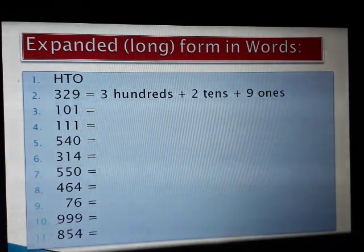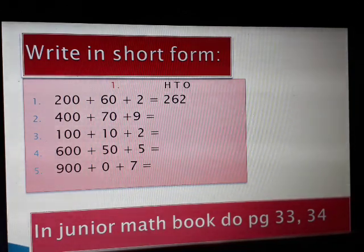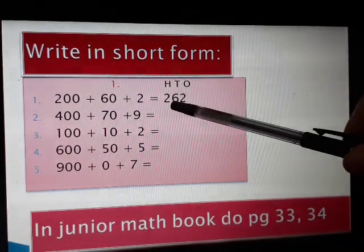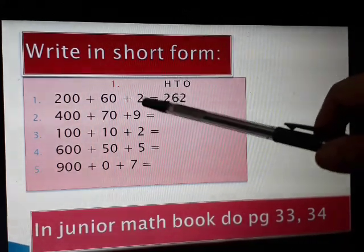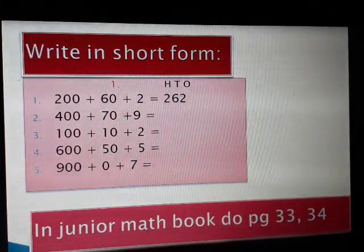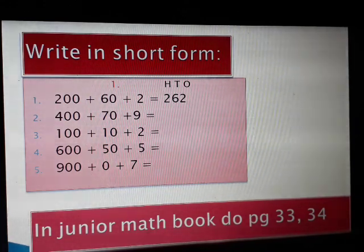Next is the short form. You have already done this with two-digit numbers — the process is the same, only the number of digits has increased. For example, 200 plus 60 plus 2: two goes in the hundreds place, six in the tens place, two in the ones place. Similarly, 400 plus 70 plus 9. Do all of this in your classwork copy in a new page. Lastly, in your Junior Maths book, do pages 33 and 34. We will meet with a new topic in our next video. Namashi, bye!